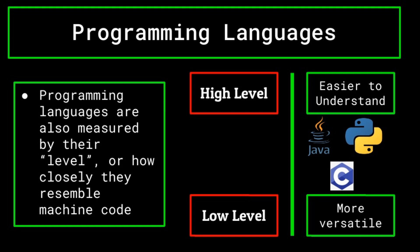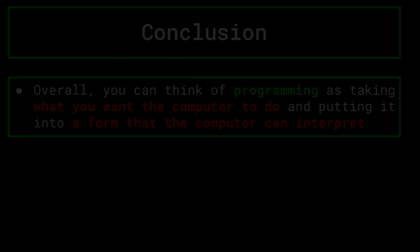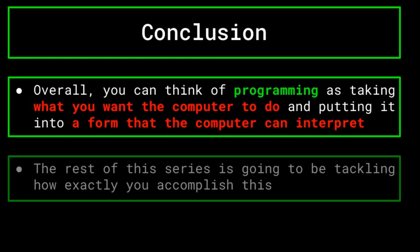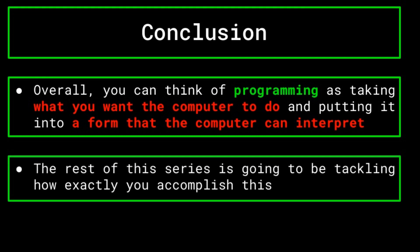Furthermore, block programming is an even more high-level and abstracted form of programming that requires little understanding of the specifics of a language to understand and write programs. Overall, think of programming as simply taking what you want the computer to do and putting it into a form that the computer can understand. How you actually go about doing that is what we're going to be tackling for the rest of this series — programming languages are languages all their own, and there's much more you'll need to learn before you can instruct a computer to even do a simple task.